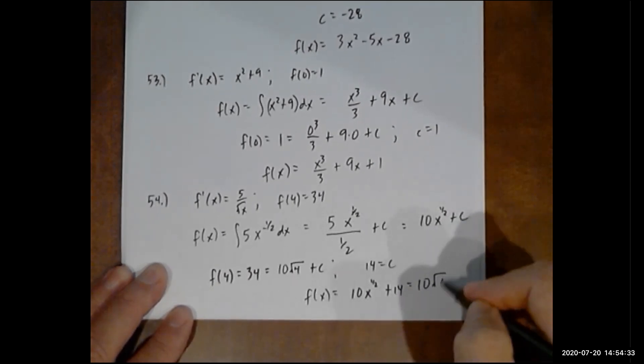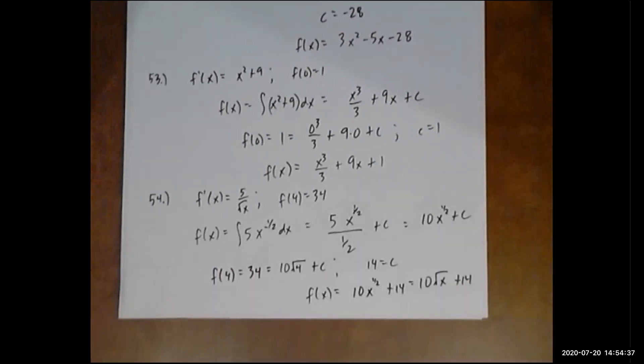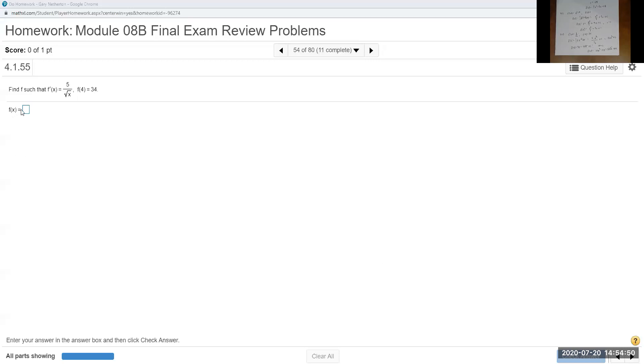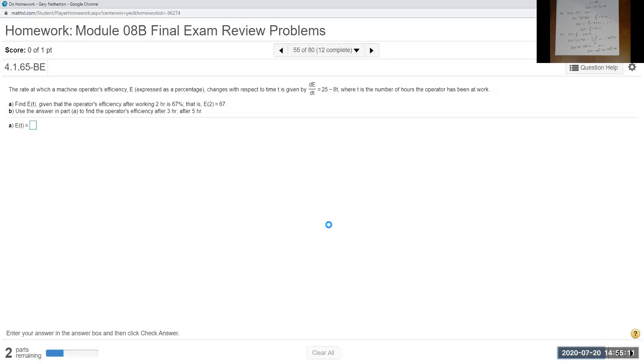So f of 4 equals 34 equals 10. x to the 1 half is really the same thing as square root. So square root of 4 plus c. So this is 2, 20. Subtract it. I believe c should be 14. So my function should be 10x to the 1 half. Or if you wanted to, 10 square root of x. Maybe I'll enter it that way just for fun. My guess is I'm sure they would probably take either answer. But just for fun, we'll type 10 square root of x plus 14. All right. Now we sort of do a story problem. So let's go ahead and take a break now. And we'll start looking at this one with the next video. Here we go.